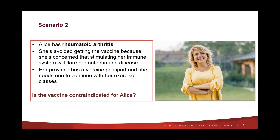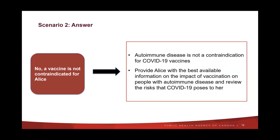For the second scenario, Alice has rheumatoid arthritis. She's avoided getting the vaccine so far because she's concerned that stimulating her immune system will flare her autoimmune disease. Her province has a vaccine passport, and she needs one to continue with her exercise classes. Is the vaccine contraindicated for Alice? No, a vaccine is not contraindicated for Alice. Autoimmune disease is not a contraindication for COVID-19 vaccines. Provide Alice with the best available information on the impact of vaccination on people with autoimmune disease, and review the risks that COVID-19 poses to her and her family.